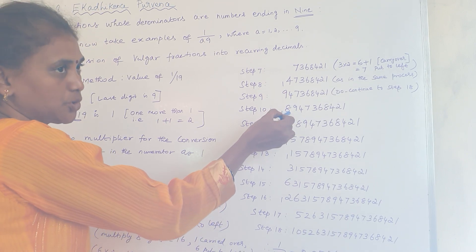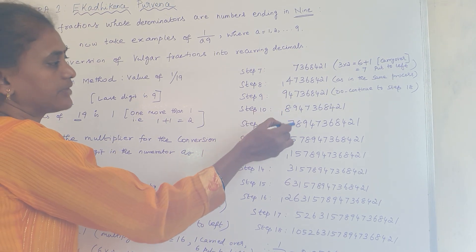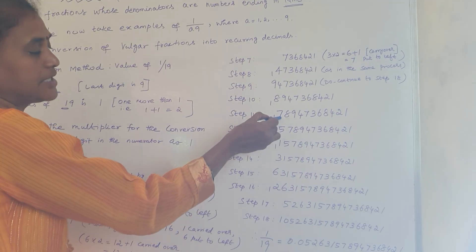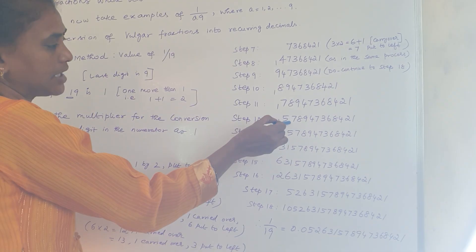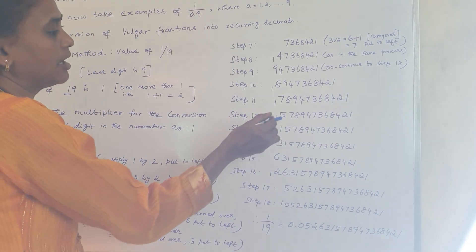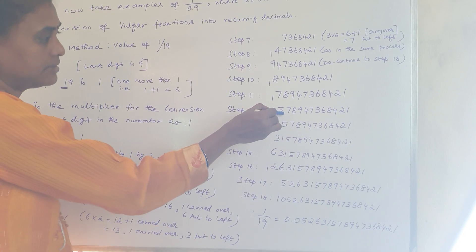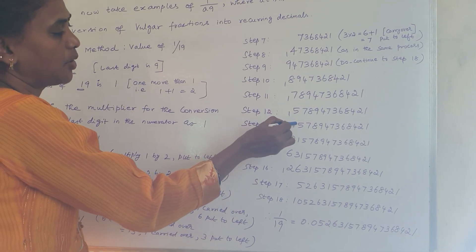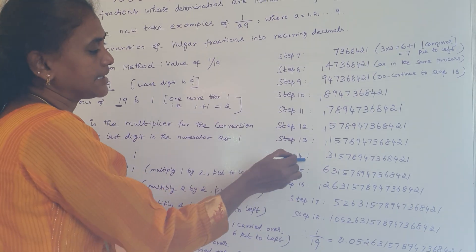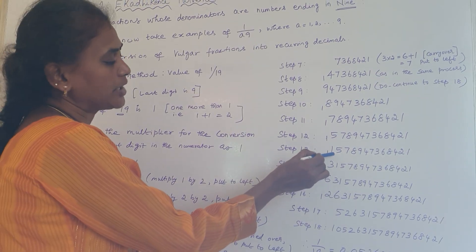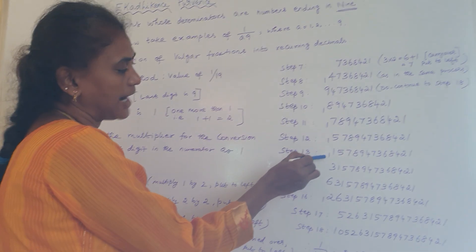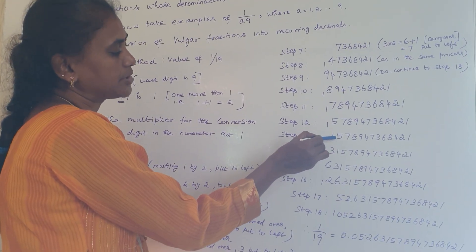In step 11, 8 times 2 is 16, plus 1 is 17 — put 7 to the left and 1 is carried over. In step 12, 7 times 2 is 14, plus 1 is 15 — put 5 to the left and 1 is carried over. In step 13, 5 times 2 is 10, plus 1 is 11 — put 1 to the left and 1 is carried over. In step 14, 1 times 2 is 2, plus 1 is 3.